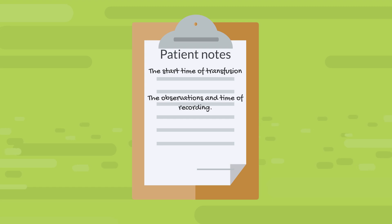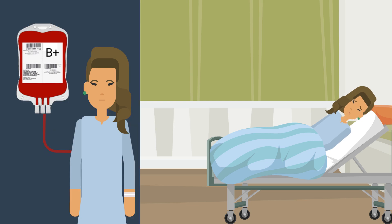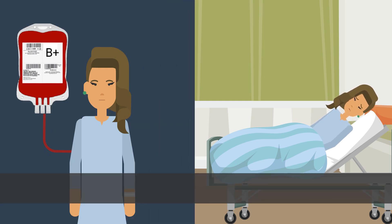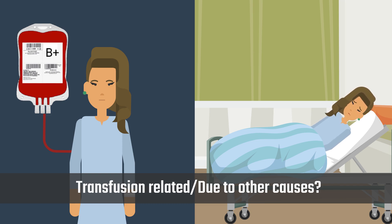Document the observations and time of recording, and the stop time of each unit administered. This will help identify whether changes in the patient's clinical status are transfusion-related or due to other causes, and this can be difficult to interpret in critically ill patients.